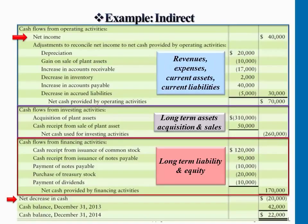For financing activities — long-term liability and equity — by adding all those activities together, we gained $170,000. So if we add those three numbers up: $70,000 plus $170,000 minus $260,000, the overall cash effect is minus $20,000. This year's ending cash balance is $22,000, which comes from the net cash effect plus whatever cash balance you had at the end of last year. Add them up and that gives you this year's cash balance.